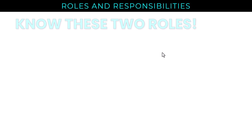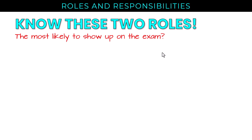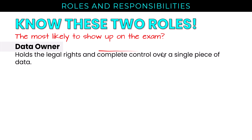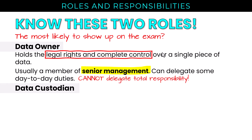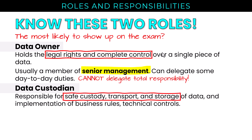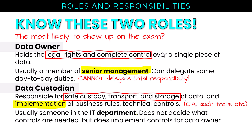We'll wrap up with a look at roles and responsibilities. What we see in the syllabus are really data roles. The data owner holds legal rights and complete control over a single piece of data — usually a member of senior management. They can delegate some day-to-day duties, but they cannot delegate total responsibility; they're still accountable. The data custodian is responsible for safe custody, transport, and storage of data, implementation of business rules and technical controls, confidentiality, integrity, availability, and audit trails. Usually someone in the IT department, they do not decide what controls are needed but implement controls for the data owner.